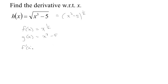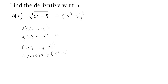The derivative of the outside is one half x to the negative one half, because we have a constant power and a variable base — that makes it a power function. The derivative of the power function: the power comes down, you get the variable to one power less. So the derivative of the outside evaluated at the inside is going to be one half times x cubed minus 5 to the negative one half. What I've done is plug in x cubed minus 5 into the derivative.